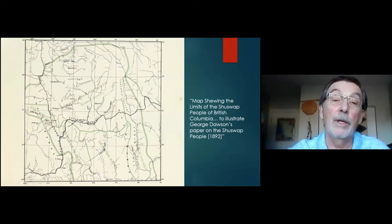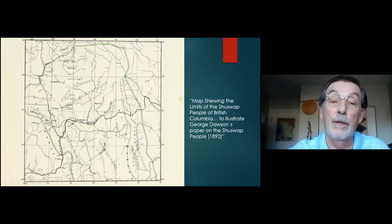This map also by Dawson shows very clearly the tribal territories, again using a hard line between the different nations. This is the Shuswap or Sequepic as he spelled it, the Okanagan, the Inalikapimuk. The detail is quite good — it's very close to the approximation of these First Nations territories today. The Arrow Lakes area is shown here, and I'll mention this area a little more.